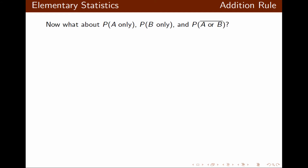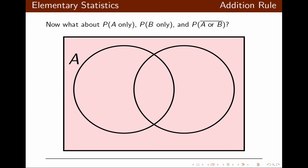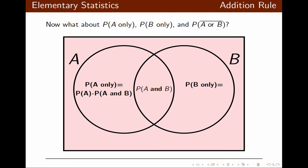Thinking in terms of probability, once we draw and label the circles, we start with the overlap. The overlap would be probability of A and B. Probability of A only would be probability of A minus probability of A and B. Probability of B only would be probability of B minus probability of A and B. And probability of not A or B, using the complement rule, is simply equal to 1 minus probability of A or B.